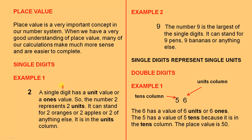Single digits. Example 1. Let's look at the number 2. A single digit has a unit value, or a ones value. The number 2 represents two units. It can stand for two oranges, or two apples, or two of anything else. It is in the units column, so when we are doing addition, it is in the units column.